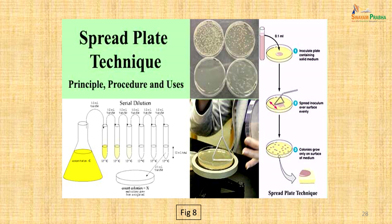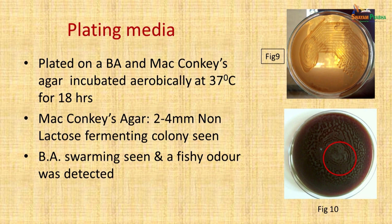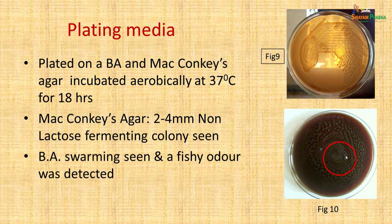The patient's sample was plated on blood agar and MacConkey's agar and incubated aerobically at 37°C for 18 hours. On MacConkey's agar, 2–4 mm non-lactose-fermenting colonies were seen, characteristic of Proteus or Pseudomonas. On blood agar, swarming was seen — the motile organism spreads in waves across the medium, so isolated colonies are not obtained. The culture also had a very fishy odour, which is characteristic of Proteus and immediately suggests a Proteus infection.